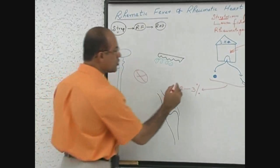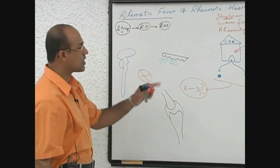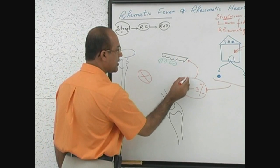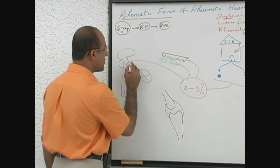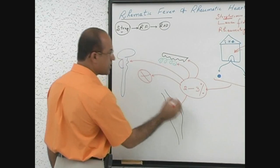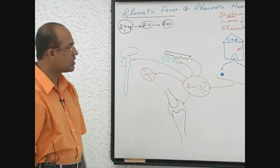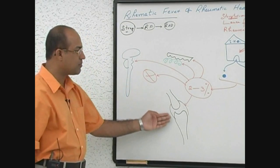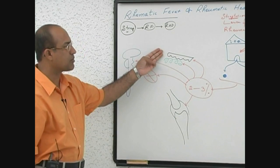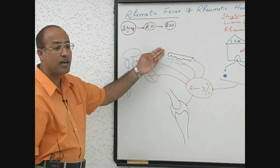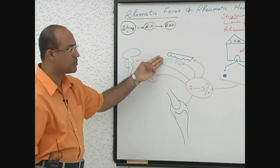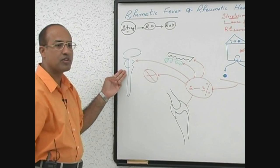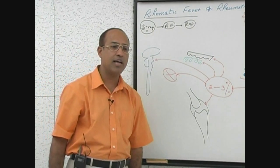Unfortunately, in 2 to 3% of people who suffer with such pharyngitis, this immune activation may produce lesions in the skin, subcutaneous tissue, central nervous system, heart, and synovial joints. These patients develop carditis, polyarthritis, special skin lesions called erythema marginatum, subcutaneous nodules, and some also develop central nervous system problems — especially motor disturbances and chorea.